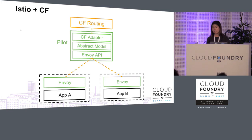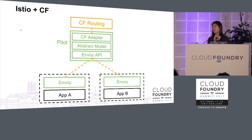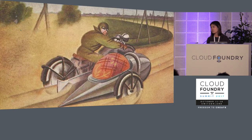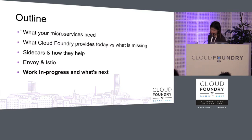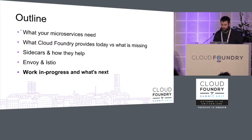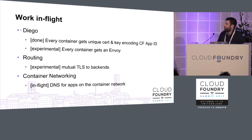For Cloud Foundry specifically, we could see the routing tier serving as the back end, with a CF-specific adapter taking information from the routing tier and transforming it into the abstract model that Pilot expects.